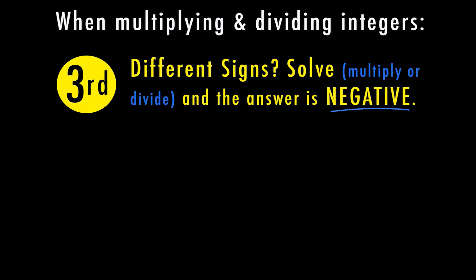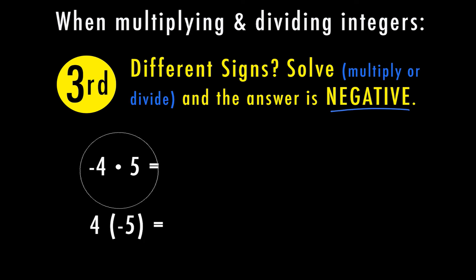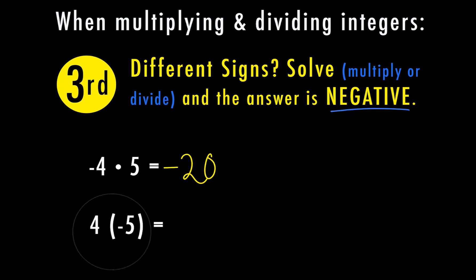Let's look at a couple of examples for the different signs situation. Here I have negative 4 times 5 — well, 4 times 5 is 20, and because they're different signs, one's negative and one's positive, my answer is going to be negative. For the next one I have 4 times negative 5. Again, 4 times 5 is 20, and a positive times a negative is a negative.